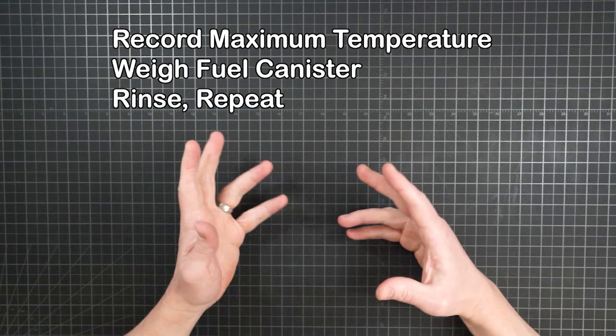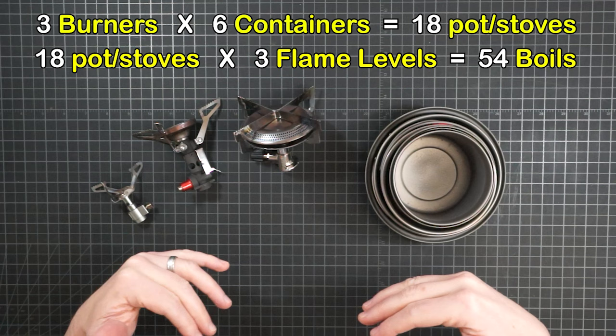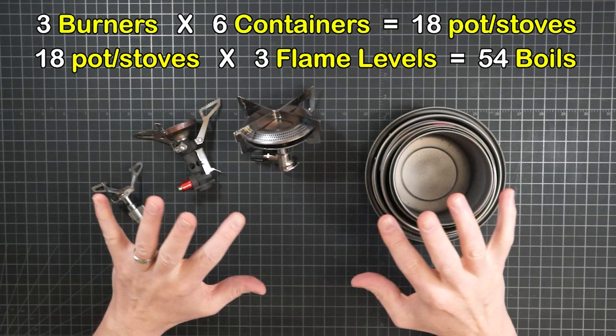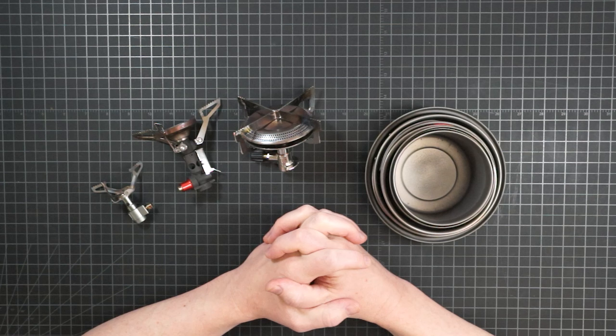Record the max temperature to calculate the delta T, weigh the canister to get the fuel spent, and start all over with the next one. Now, I had three burners and six containers making 18 combinations of pot and stove. Then I had to do all 18 of those arrangements over again with each of the three flame levels, meaning I had to do the whole routine 54 times to capture every combination of this pot with that stove at this level. And there's an old adage that says, a watched pot never boils. I can, at this point, assure you that is not true.